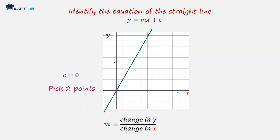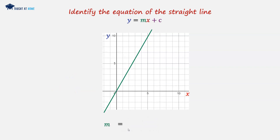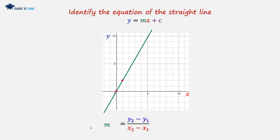For the second point, we want to pick a point that lies at an intersection of the x and y grid. Here is an intersection point, here is an intersection point, and here is an intersection point — we can pick any of these. We'll go for the first one. Now we can put these into the gradient equation: y2 minus y1 over x2 minus x1. Point 1 is at the origin, which is (0, 0). Point 2 is where x is 1 and y is 2.